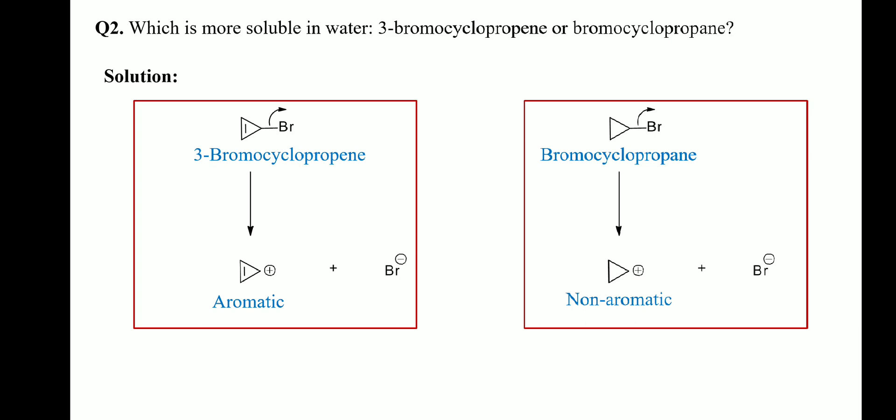Question 2: which is more soluble in water — 3-bromocyclopropene or bromocyclopropene? Solubility in aqueous solution increases with the increasing stability of the cation. 3-Bromocyclopropene, after removal of the bromide ion, gives the more stable cyclopropenium ion due to its aromatic nature. Bromocyclopropene, after removal of the bromide ion, gives the cyclopropyl cation, which is less stable because of its non-aromatic nature. So 3-bromocyclopropene is more soluble in water.